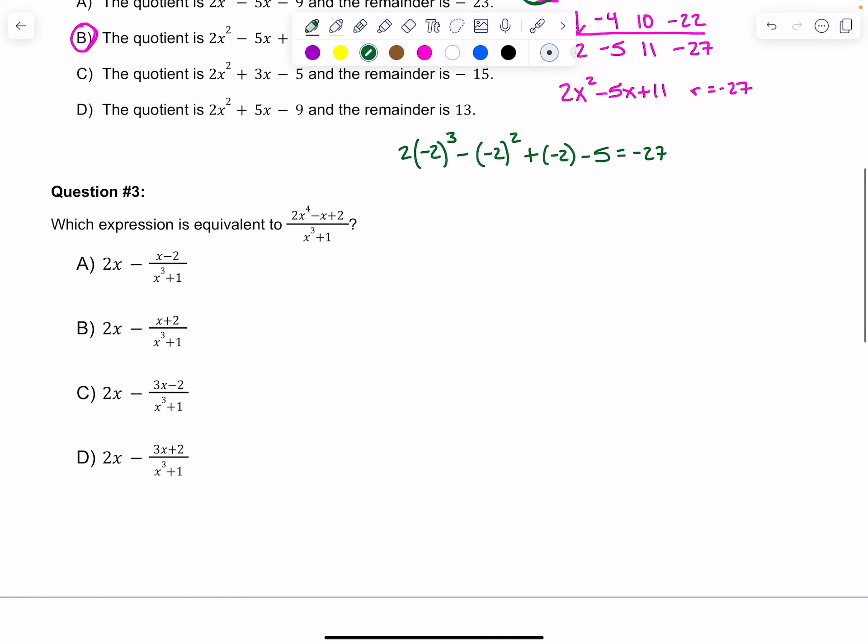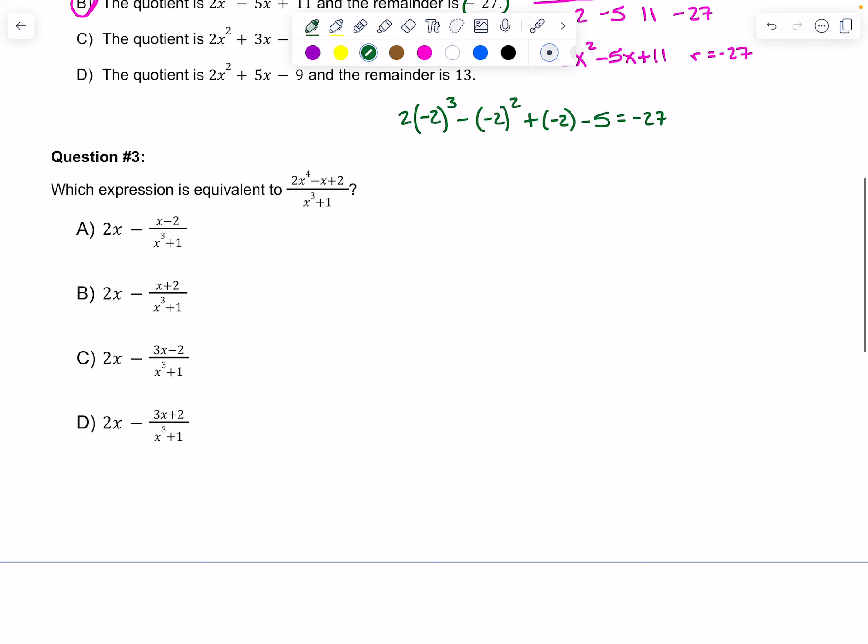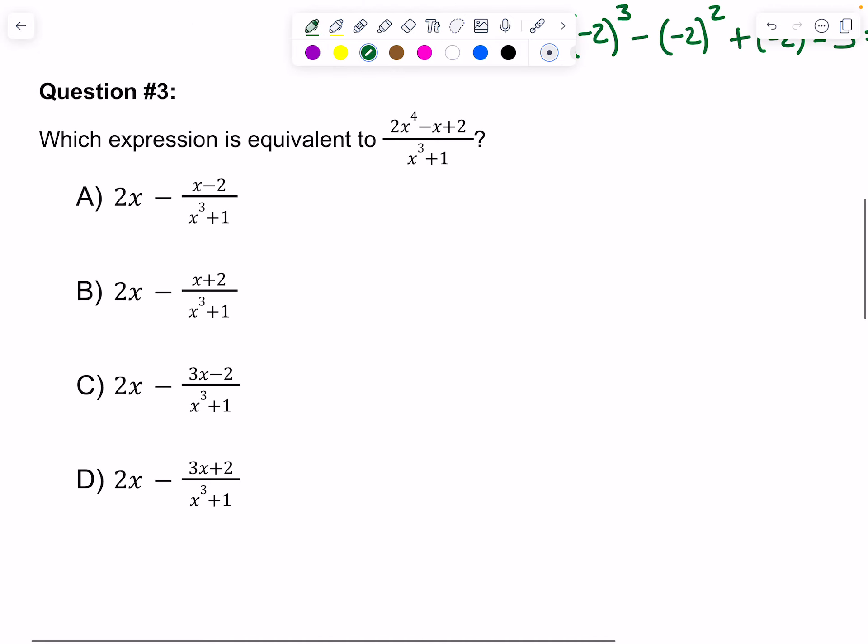Let's look at number 3. Which expression is equivalent to 2x to the 4th minus x plus 2 divided by x cubed plus 1? When they want to know things are equivalent, you could type this in Desmos and match them up. Let's do it the right way first. My divisor is cubic, so I cannot use synthetic division. I would have to use long division.